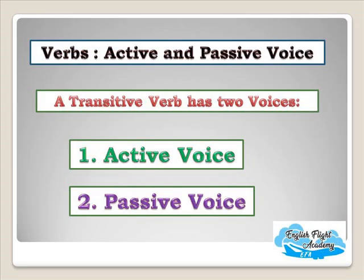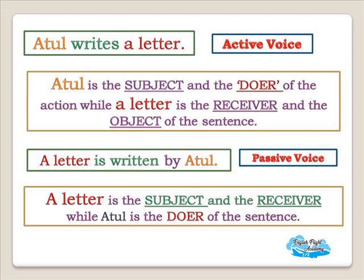As you know, a transitive verb has two voices — active voice and passive voice. For example, 'Atul writes a letter' is active voice. Atul is the subject and the doer of the action, while 'a letter' is the receiver and the object. In passive voice, it becomes 'A letter is written by Atul.' 'A letter' is the subject and receiver, while Atul is the doer.